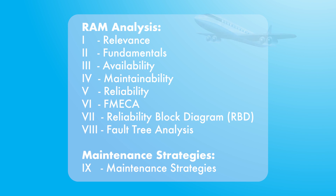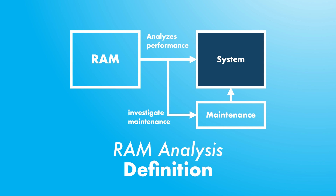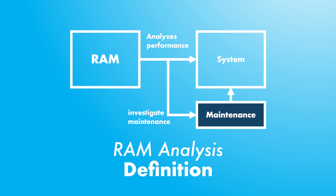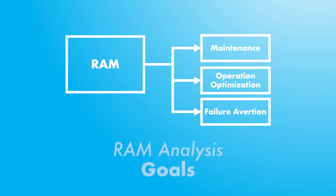Let us start by discussing the relevance of RAM analysis. RAM is a type of analysis used to assess if a given system, such as an aircraft engine, is performing well and if the maintenance is being done efficiently. This framework is not new; it has been extensively discussed both in theory and in practice when analyzing complex and critical systems. RAM analysis is frequently used to address maintenance concerns but also to identify potential failure points of the system.